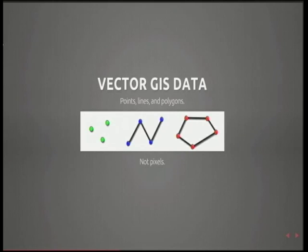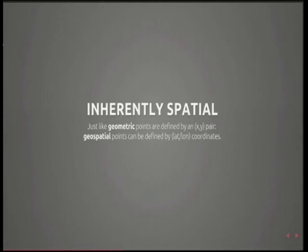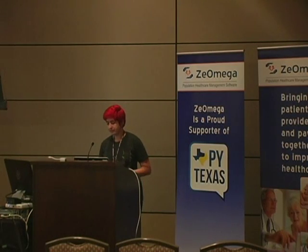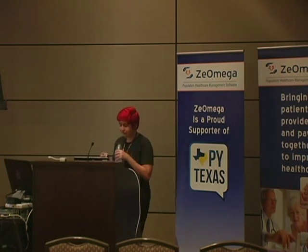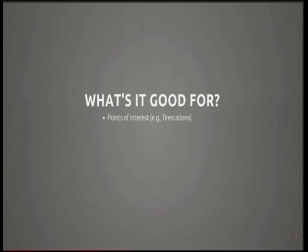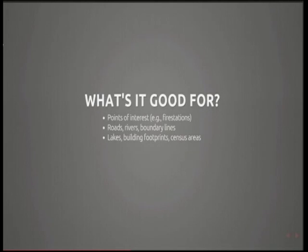For things like fire stations, we use vector data. Vector data is made up of points, lines, and polygons, which you're probably familiar with in a geometric sense. In the same way that geometric points are made up of an X, Y coordinate, you just use latitude and longitude and it's GIS vector data. You can use points for points of interest like fire stations, lines for rivers or roads or boundary lines, and polygons for lakes, building footprints, census areas. A lot of public data portals will have this sort of data available for different areas.